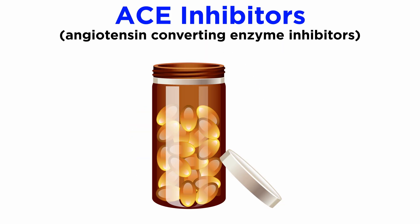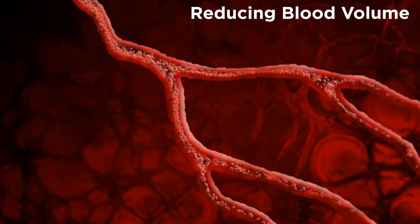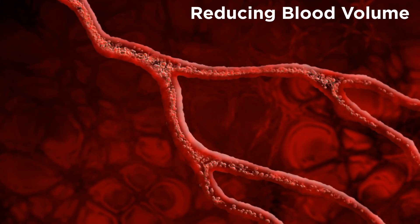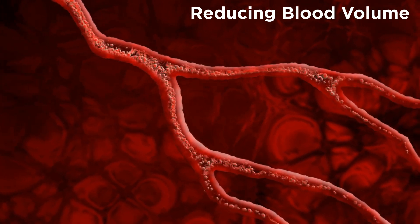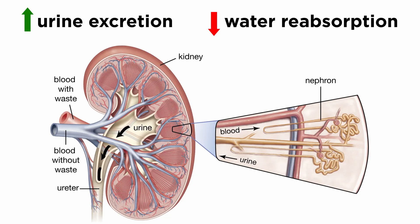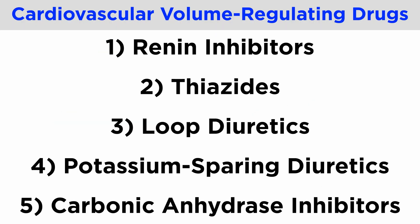In the previous tutorial, we learned about ACE inhibitors, so let's discuss some more pharmacological interventions used to reduce blood pressure by reducing the overall volume of fluid contained within your cardiovascular system. In general, these drugs all work by increasing urine excretion by inhibiting the kidney's ability to reabsorb water in the nephron. There are five additional categories of cardiovascular volume-regulating drugs that are important to be aware of.